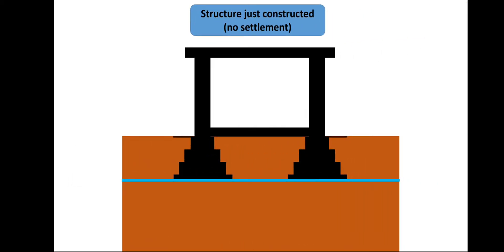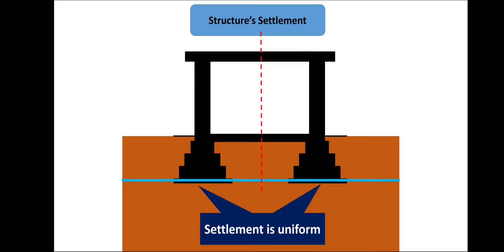A recently constructed structure shows no settlement at all — the blue line shows the margin where the footing or foundation has been placed, and it is above the blue line, meaning no settlement has taken place. In the next diagram, the footing has gone slightly below the blue line, indicating the structure has settled, but note that this settlement is uniform — it is not differential settlement. When constructing a structure, some settlement will occur, but it should be uniform and within limits.